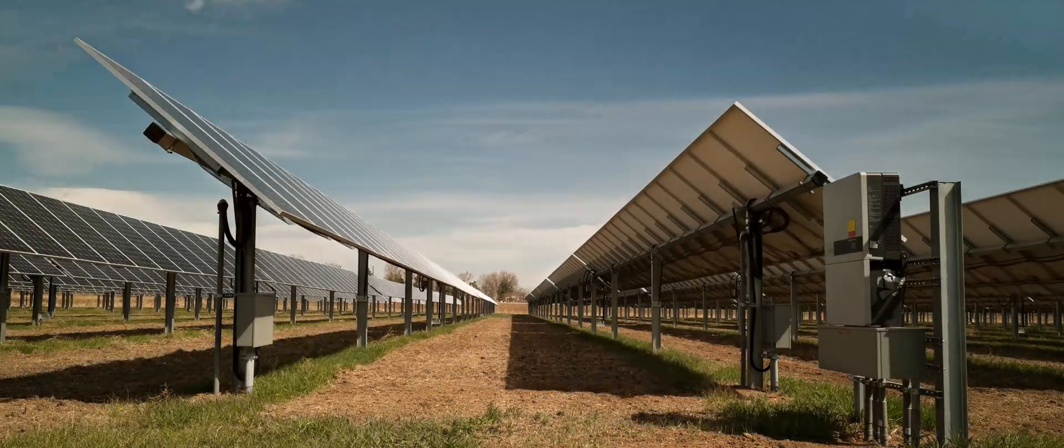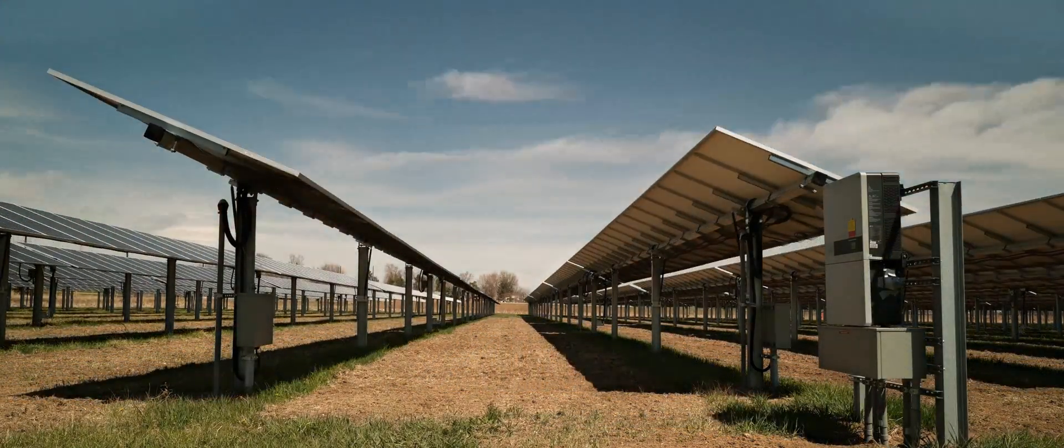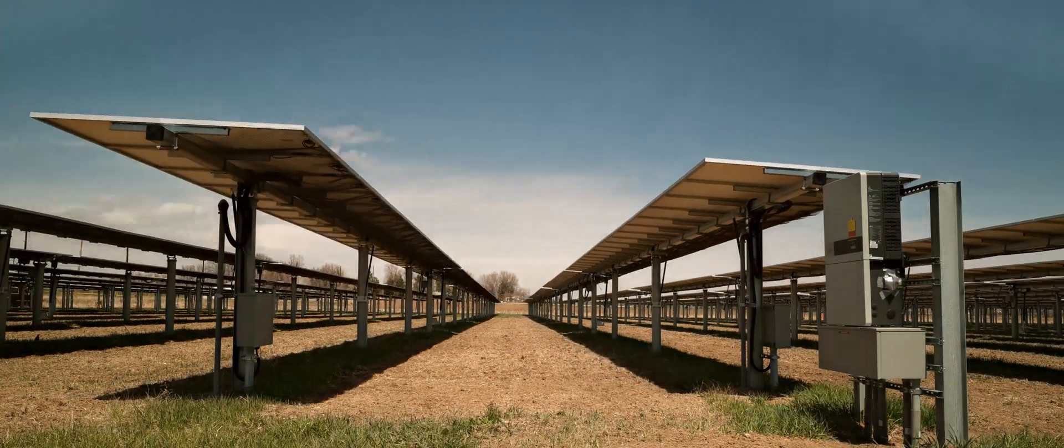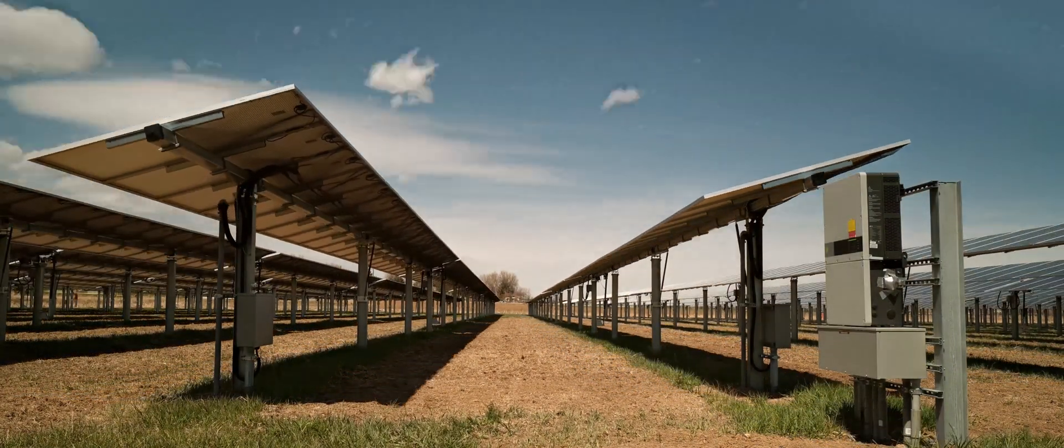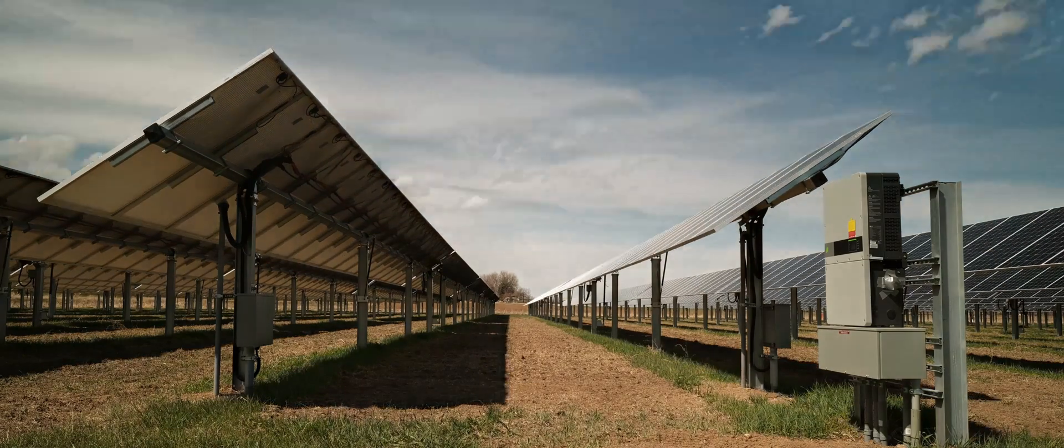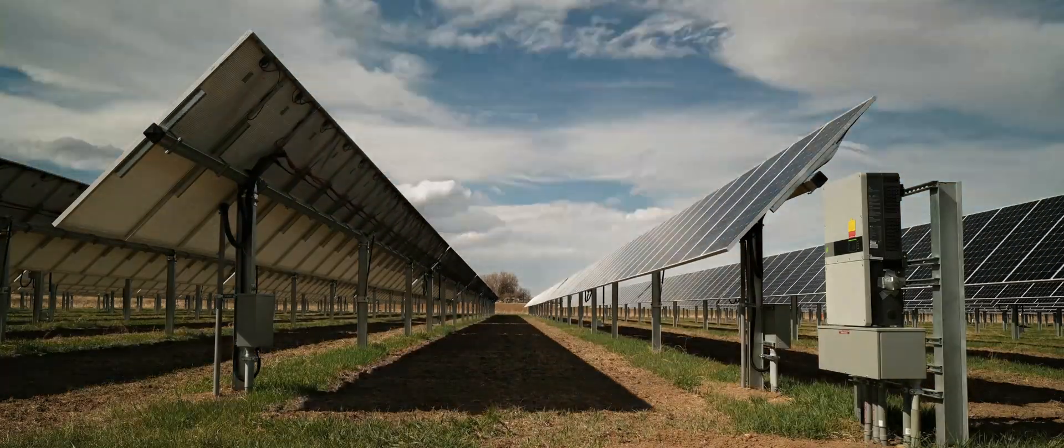There's these unique microenvironments that occur within a solar array from the rainfall redistribution that happens when you have a single axis tracking panel. So a single axis tracking panel follows the sun across the sky, so it's tipping to the east in the morning, tipping to the west in the afternoon, and then there's also these dynamic shading patterns that occur at the same time.